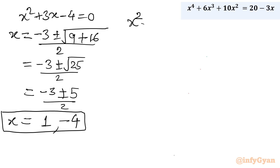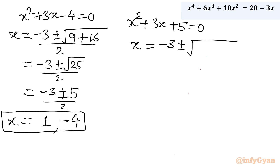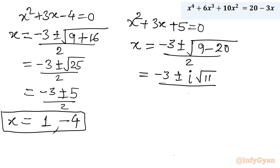Now let us consider the second quadratic: x² + 3x + 5 = 0. Applying the quadratic formula: x = (−3 ± √(9 − 20)) / 2 = (−3 ± √(−11)) / 2. This gives √(−11) = i√11, so x = (−3 ± i√11) / 2. So there are 2 complex solutions as well.